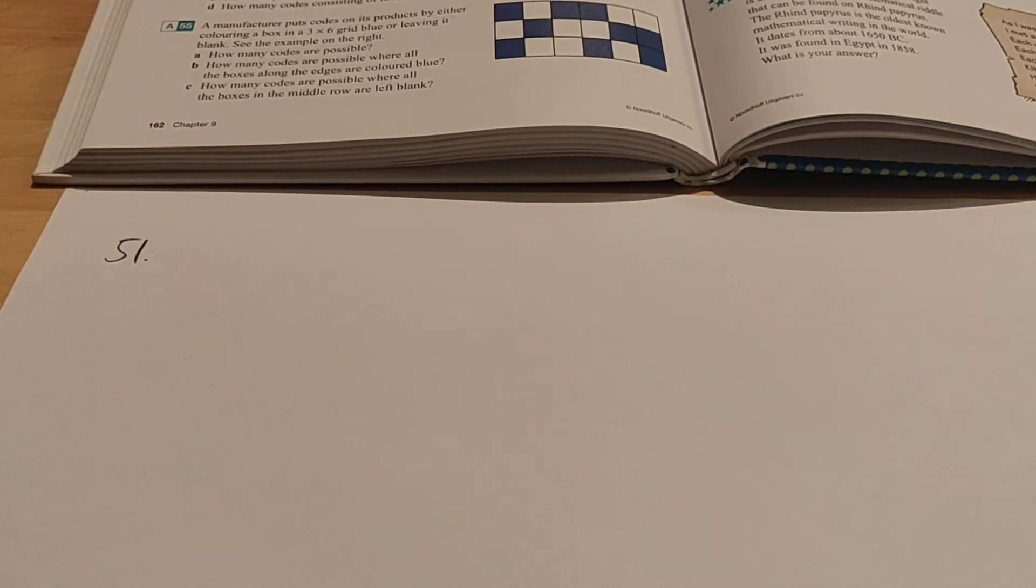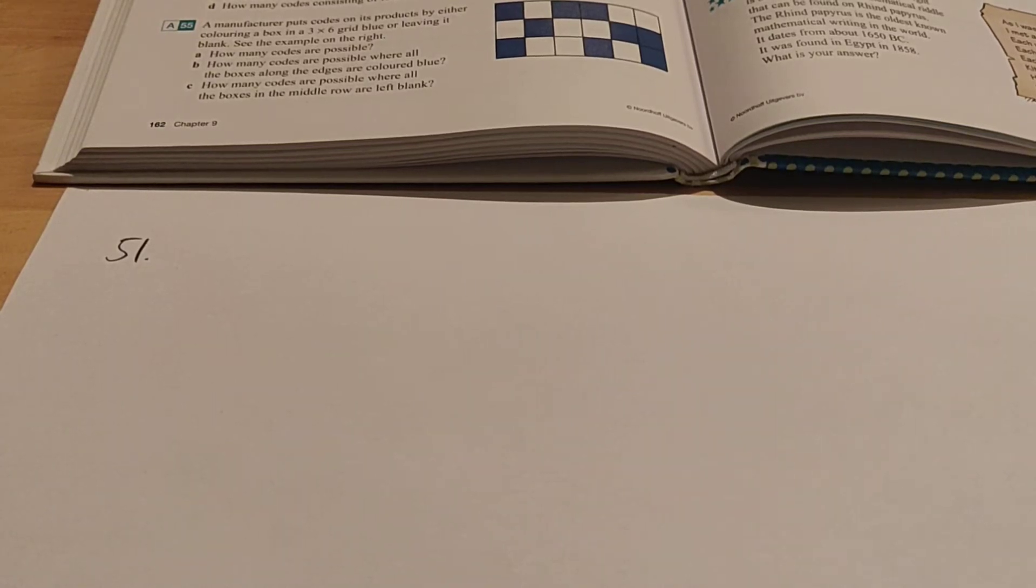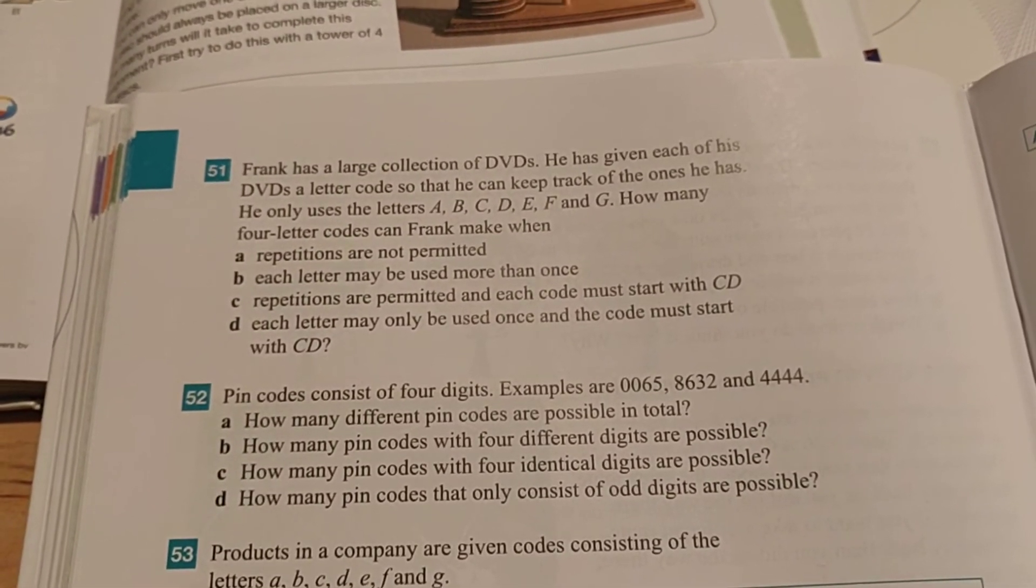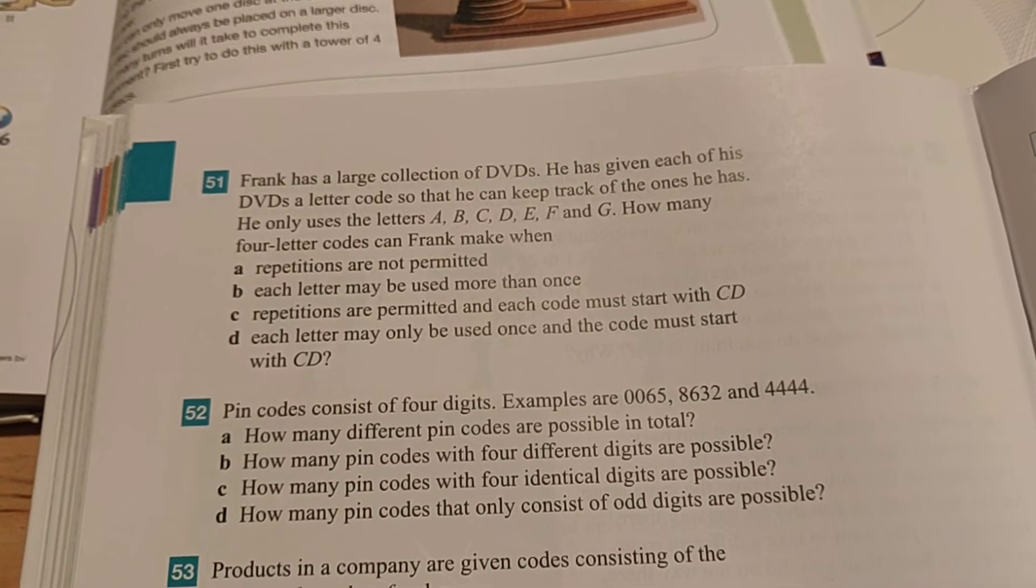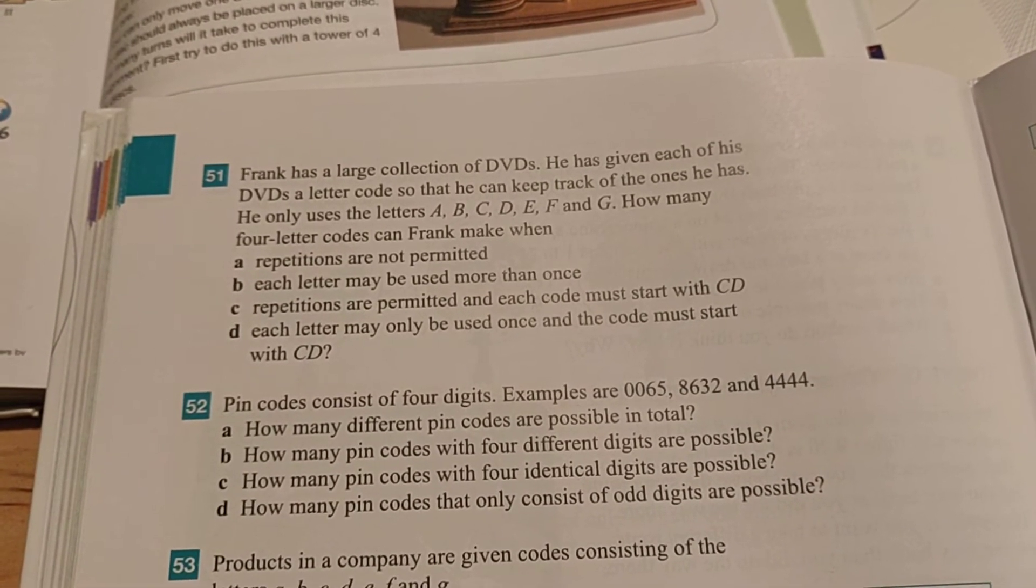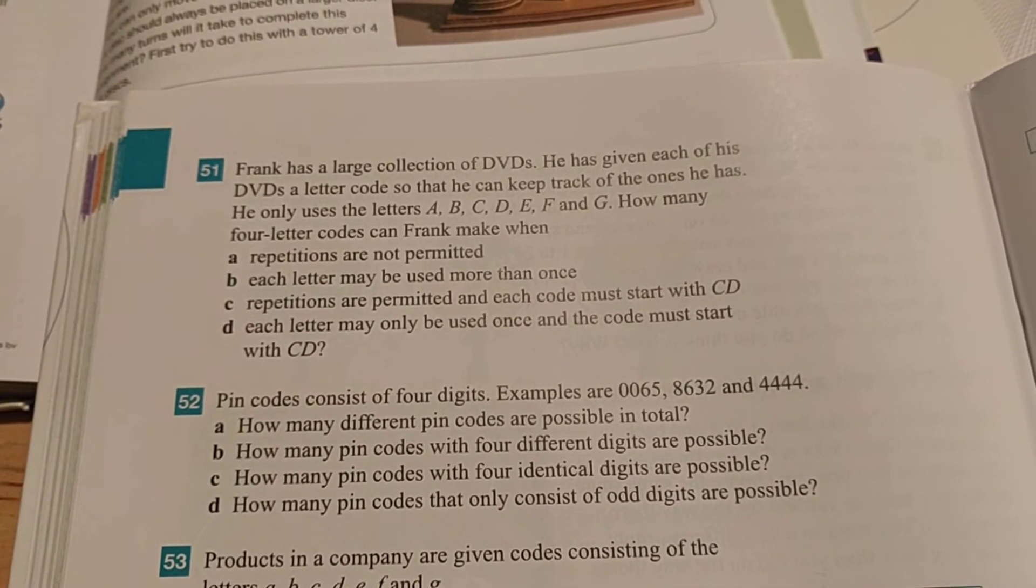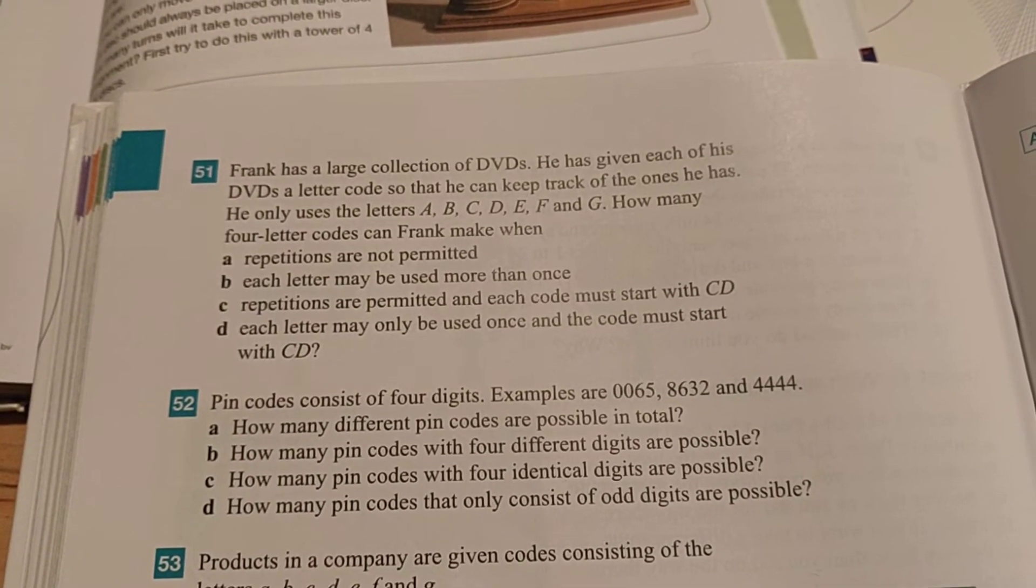All right, there's a video for 3HD about a couple of the exercises that you have to do today, starting with exercise 51. It says here Frank has a large collection of DVDs. He has given each of his DVDs a letter code so he can keep track of the ones he has. He uses the letters A, B, C, D, E, F, and G.